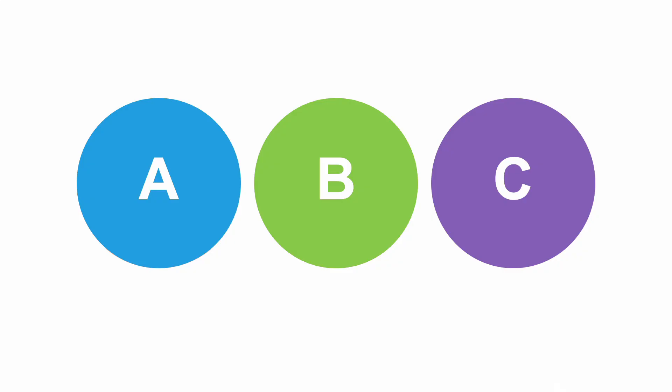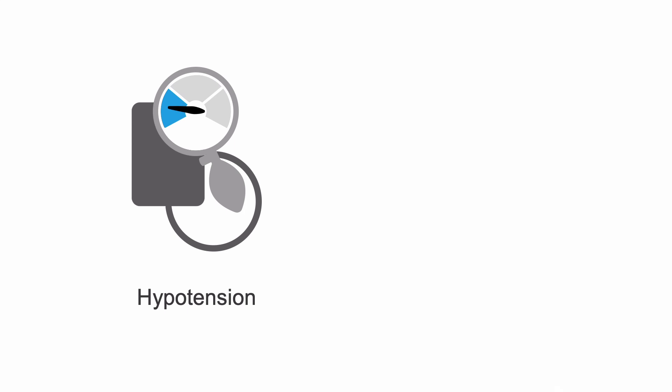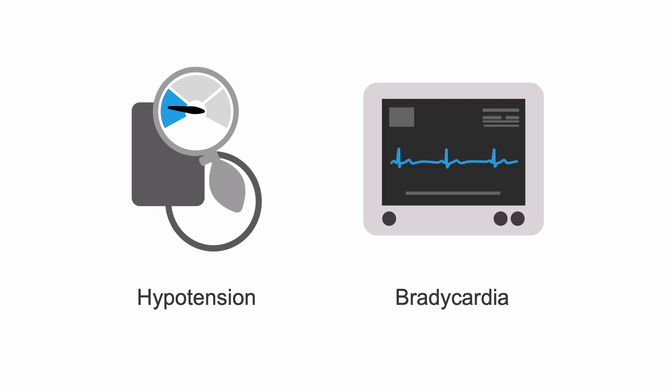When addressing a patient with a suspected spinal cord injury, attend first to the ABCs. Hypotension and hypoxia are mortal enemies of the injured spinal cord. Spinal cord injured patients often do present with hypotension and bradycardia, and this will need to be addressed because it can lead to worsening neurological deficits.